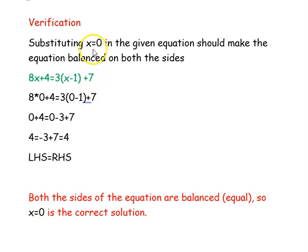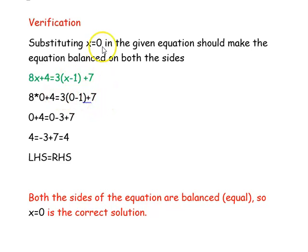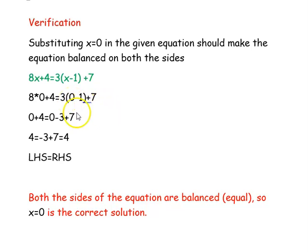We will verify our answer by substituting x equal to 0 in the given equation: 8x plus 4 equal to 3 into (x minus 1) plus 7. Instead of x, we substitute 0: 8 into 0 plus 4 equal to 3 into (0 minus 1) plus 7.